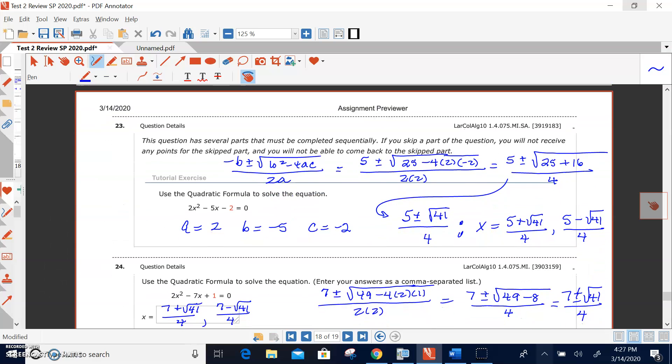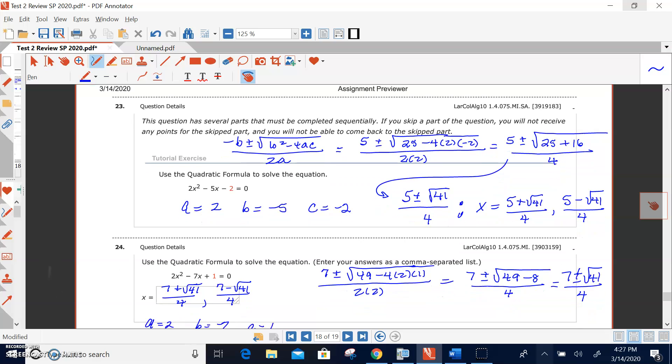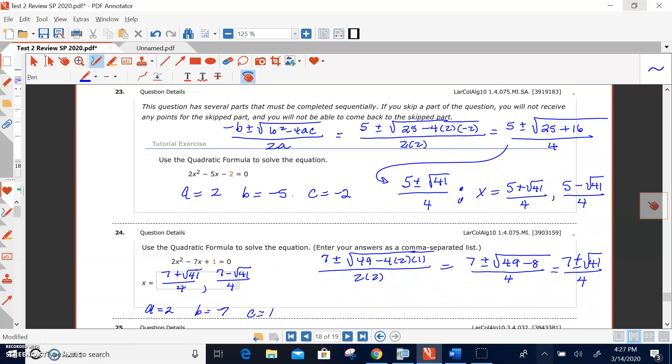Going to the next page, 23 and 24 are using, practice using the quadratic formula. So we did that many times in class. I've got the formula here written down, negative b plus or minus the square root of b squared minus 4ac, all divided by 2a. And so 23 and 24 is practicing using the quadratic formula.